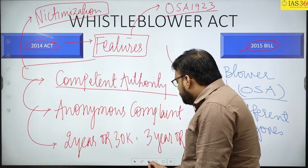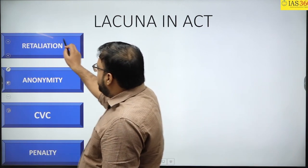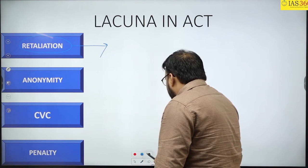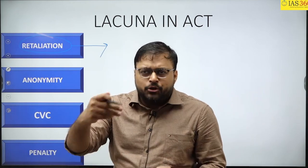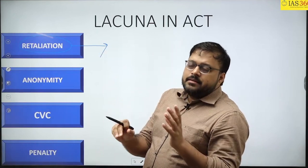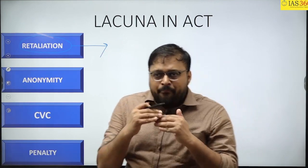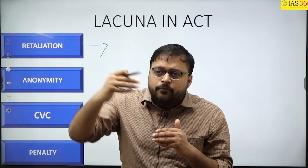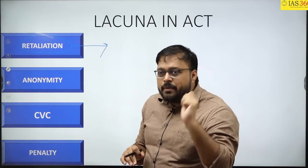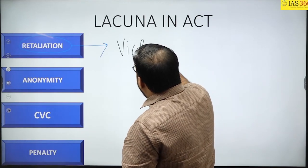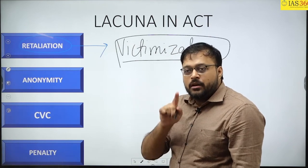Now let us look at the lacunas in the act. The first challenge is retaliation. Whenever a person reveals information, they are considered a traitor — for example, Snowden, or Julian Assange. They are seen as having acted unethically against their organization. In practice, retaliation takes the form of the organization giving them leave without pay, sending them on exile, or suspending them. The act talks about protection from victimization, but in reality whistleblowers are being victimized.